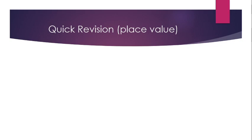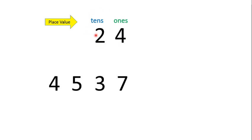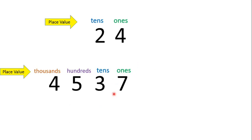Let's have a quick revision regarding place value. What is this number? This is 24. The place value for 4 is 1s, and the place value for digit 2 is 10s. How about this one? This is 4537. Digit 7 is 1s, digit 3 is 10s, digit 5 is 100s, and digit 4 is 1000s. That is the place value.